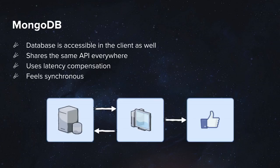Meteor uses MongoDB as its database layer. I believe they use MongoDB over any other database because it uses a JavaScript shell, meaning you can use a single language to write for the client, server, and database. The database is accessible from the client as well, under certain restrictions. And thanks to a package called Minimongo, it also shares the same API on the client.